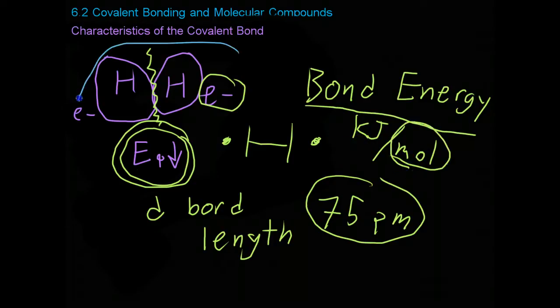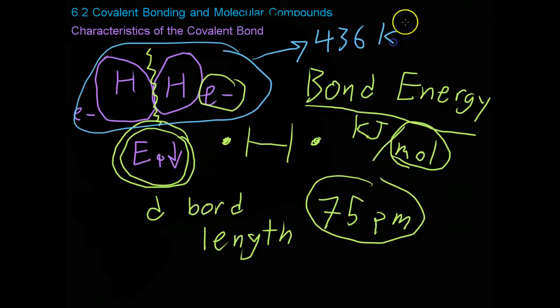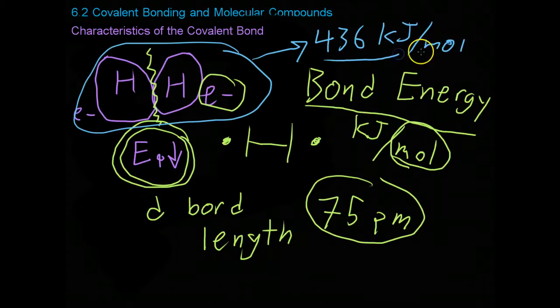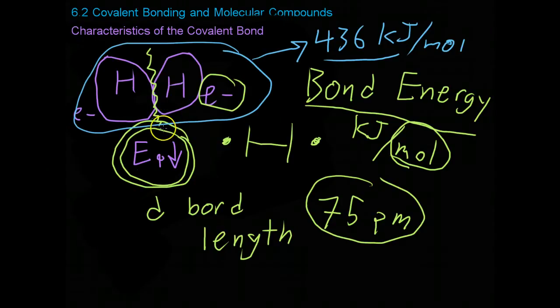They measure the amount of energy it takes to completely break the bonds in one mole of substance. The bond energy for diatomic hydrogen, like the example we have over here, is 436 kilojoules per mole, meaning it takes 436 kilojoules of energy to break up 6.02 times 10 to the 23rd bonds within these various molecules. I know this is kind of the simplest example with two atoms of the most basic element there is. However, these principles all apply to the rest of covalent bonds.